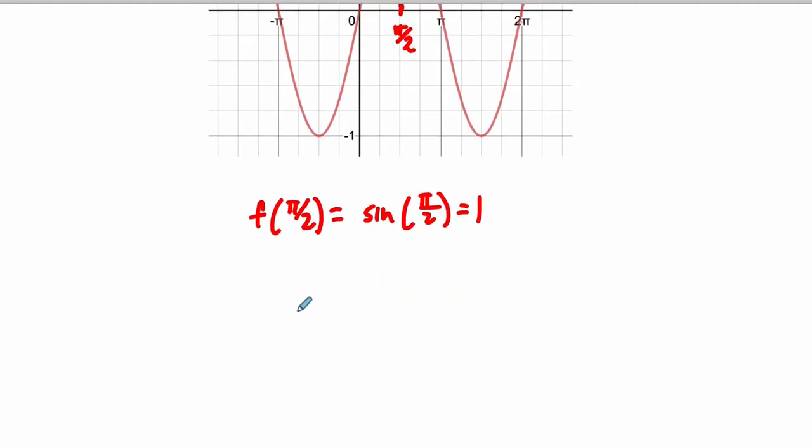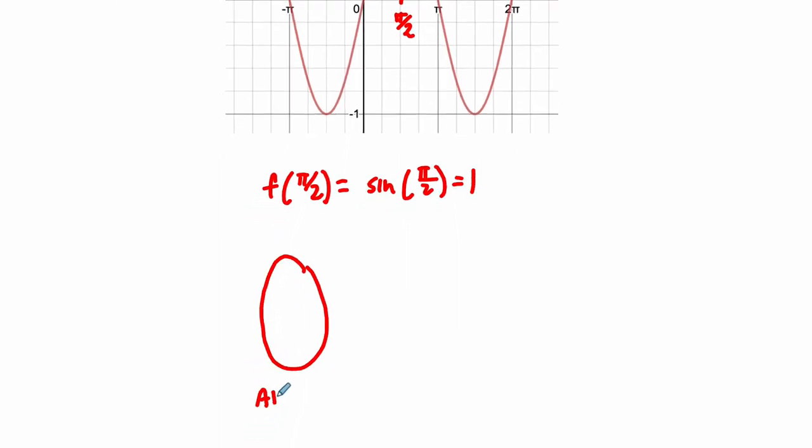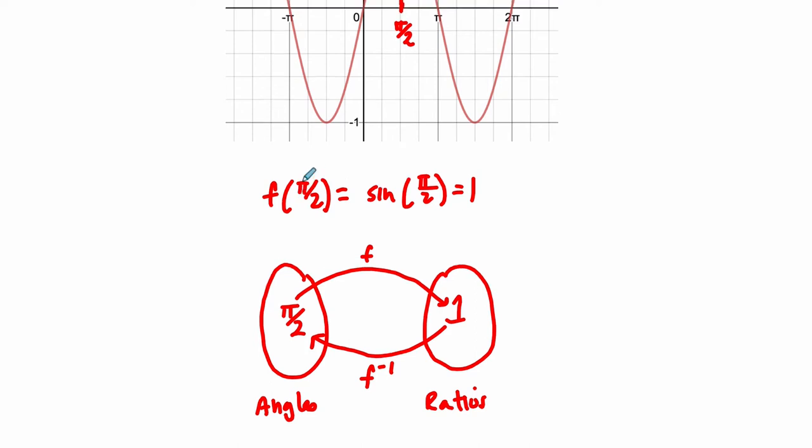So it is true that the f of pi over 2, sine of pi over 2, is equal to 1. There's no problem there. In terms of speaking of functions, here we have a group of angles. And we have a group of ratios here. Think about what the sine function does. It takes an angle, like pi over 2, and it maps it to its corresponding ratio of 1. And that's what the function f does. An inverse function goes in the opposite direction. We use notation like this to show an inverse function. And everything is great here.